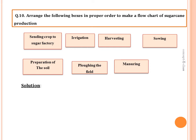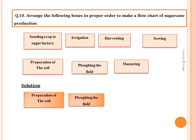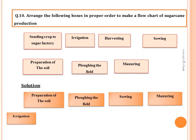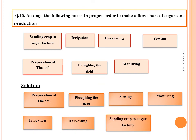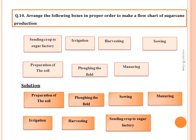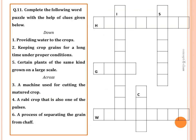Question ten: arrange the following boxes in proper order to make a flow chart of sugarcane production. The steps are: first, preparation of soil by ploughing; second, sowing the seeds; third, applying manure and fertilizers; fourth, irrigation — watering the plants; fifth, harvesting — cutting the mature crops close to the ground; then sending the crop to the sugar factory and storing it in silos or granaries.